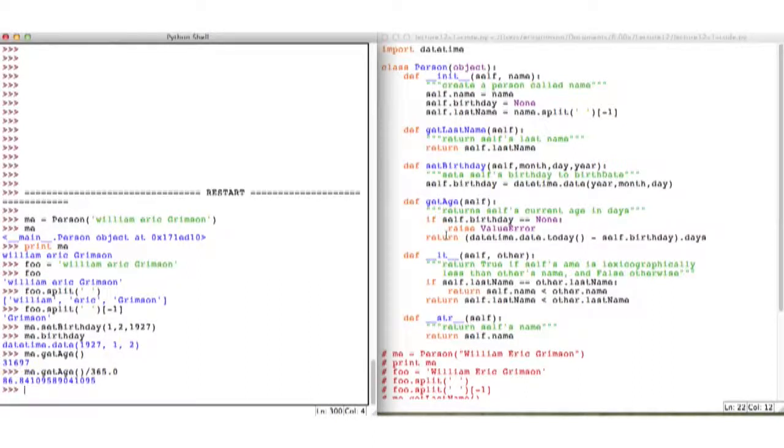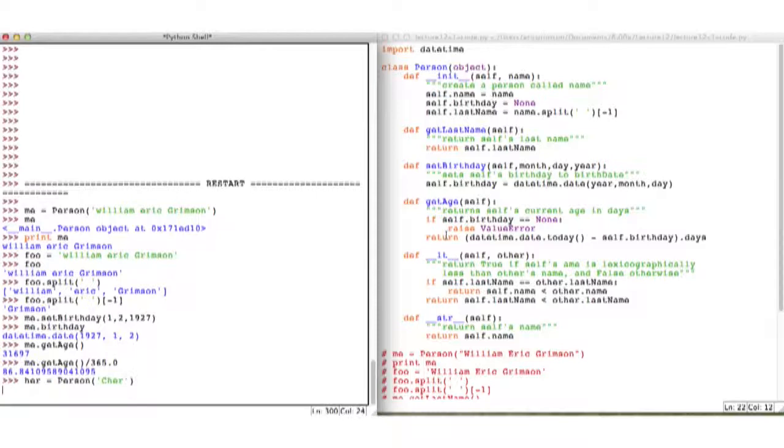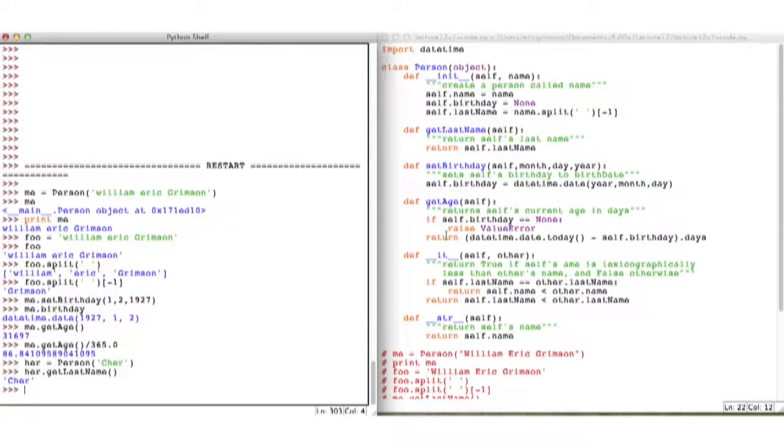Now, the nice thing about this is I've created a little object. I can get pieces out of it. Let's create another object. I'm going to create a person, a famous person, singer Cher. Notice, because she only has one name, I ought to be able to still get the right thing. And if I get her last name, it returns it, which is great.